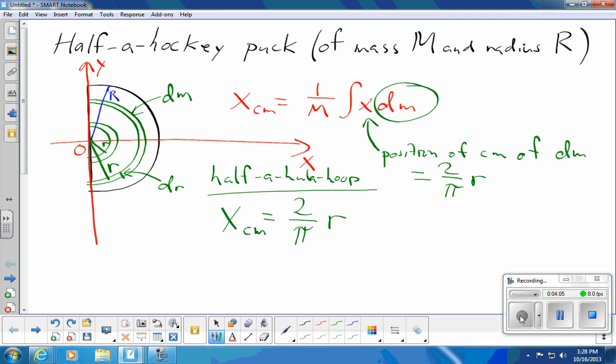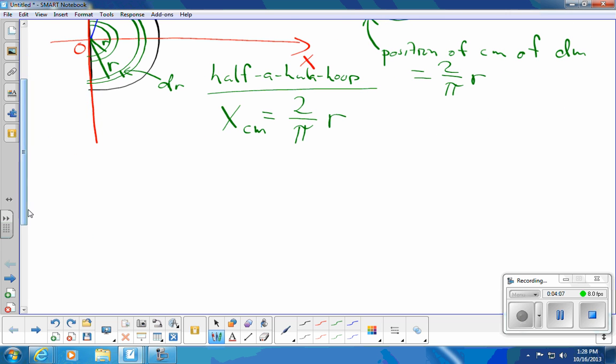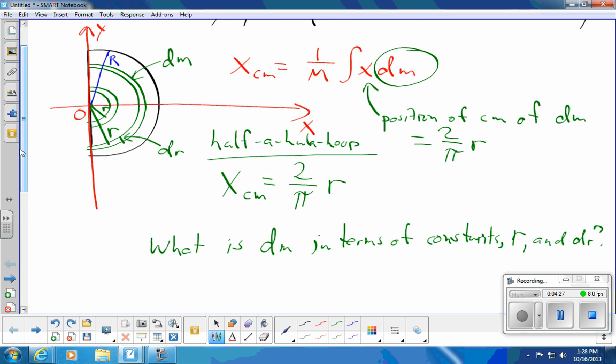So I'm interested now in expressing dm. What is dm in terms of constants R, little r, and dr? Remember, r, of course, is the radius, variable radius, of each individual onion ring that I've cut this thing into.